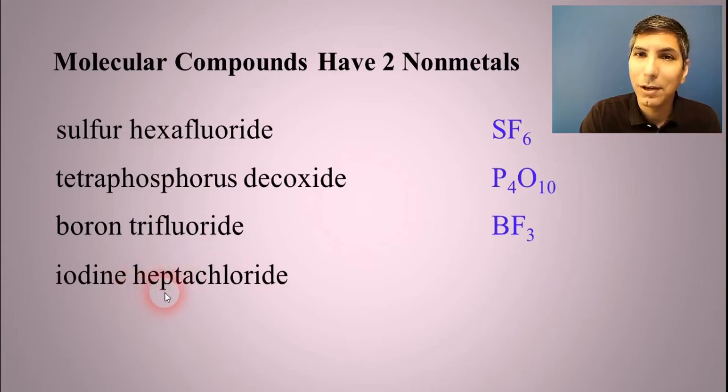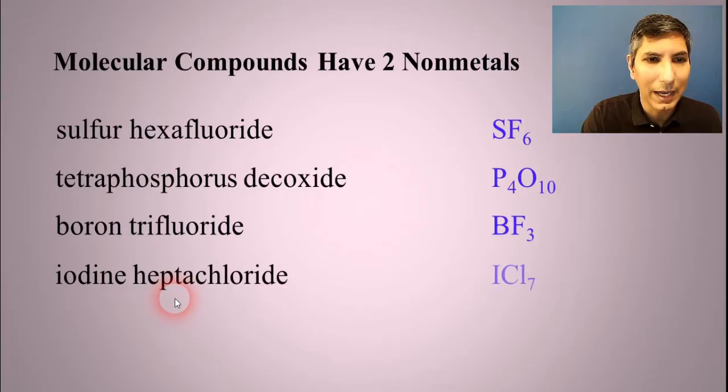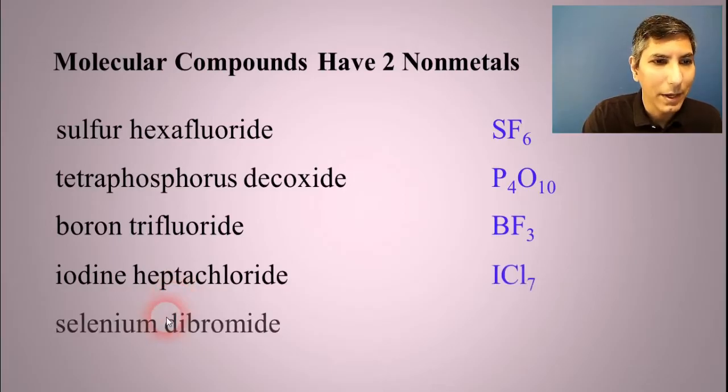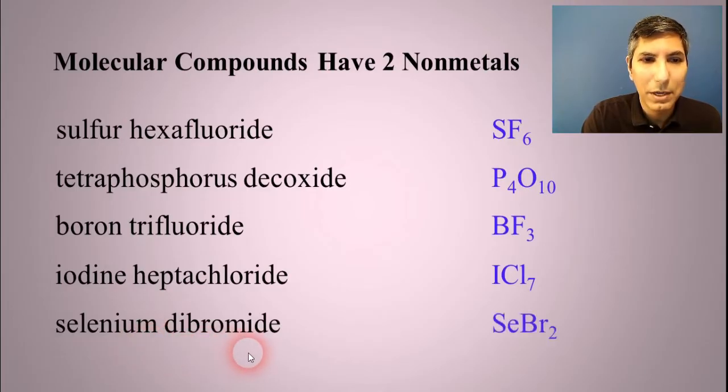Iodine heptachloride. This is one a few students forget about. Hepta means seven, so it's ICl7. Selenium dibromide. Di means two, doesn't it? So it's SeBr2.